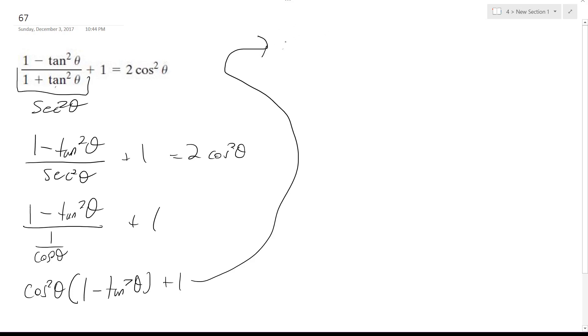So this actually becomes cosine squared theta minus—and then tangent converted is sine squared theta over cosine squared theta—and these cancel off and I just get plus 1. So it becomes cosine squared theta minus sine squared theta plus 1 equals 2 cosine squared theta.